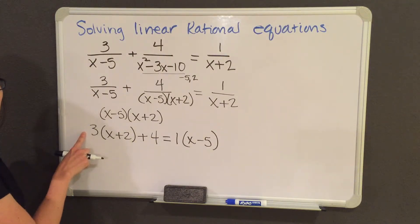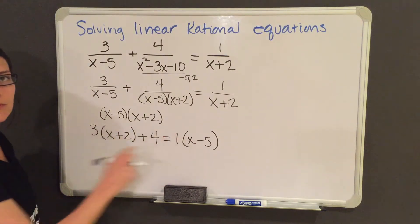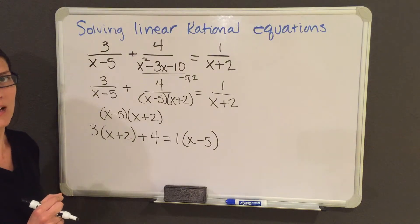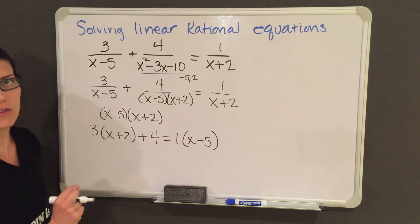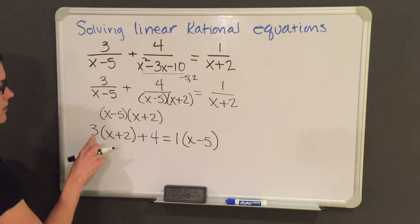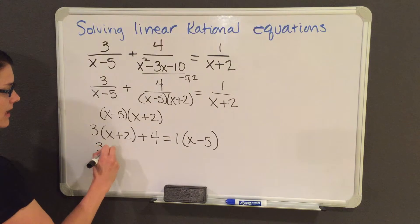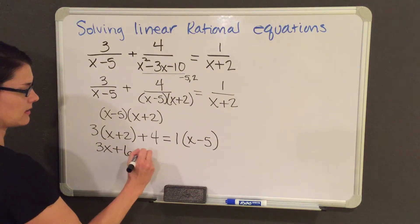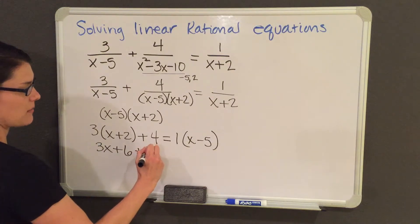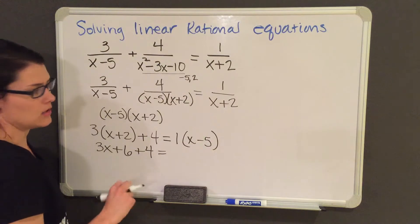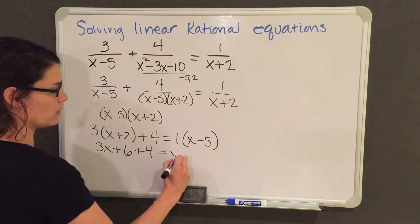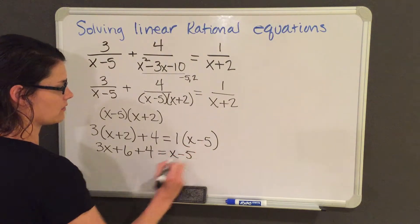After you get here, now all you need to do is simplify the equation and solve for your x. So the first thing I'm going to do is distribute any numbers I need through parentheses. So 3 times x is 3x and 3 times 2 is 6. I will just rewrite plus 4 and the equal sign. And 1 times anything doesn't change the equation, so it will just remain x minus 5.